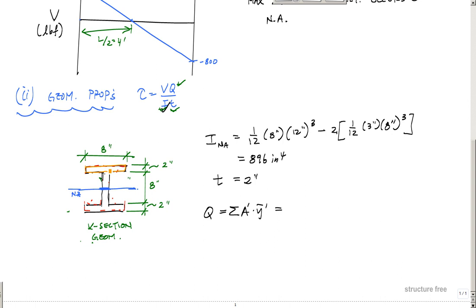Let me use purple for the second area right here. I need to know the distance of the centroid of each of these from the neutral axis. So I'll call this y1 prime, this will be area one, and then the centroid of this area will be y2 prime right there.